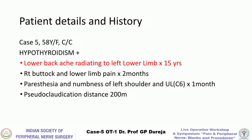We are now on case 5. She is a 58-year-old female, known case of hypothyroidism. She has mainly complaints of lower backache radiating to the left lower limb, with a long history of 15 years.